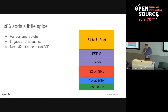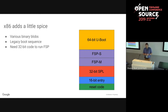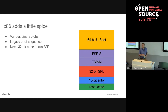For x86 things are even more interesting because there are binary blobs called the Firmware Support Package (FSP) that have to go somewhere and be accessed at runtime. There's also 16-bit reset code and entry code. In this particular case we're running a 64-bit U-Boot but we need SPL as a 32-bit loader to get into 64-bit mode, so you end up with all these different pieces.